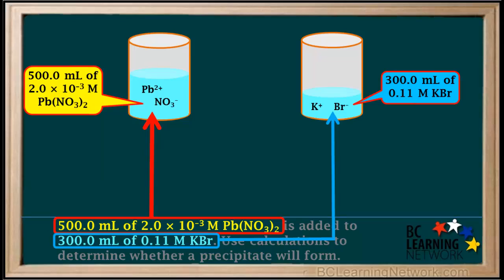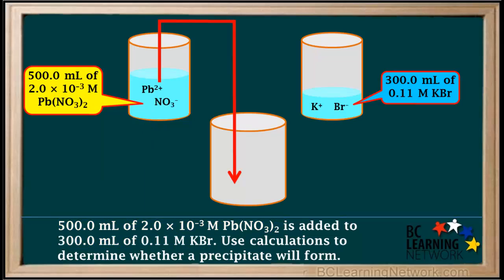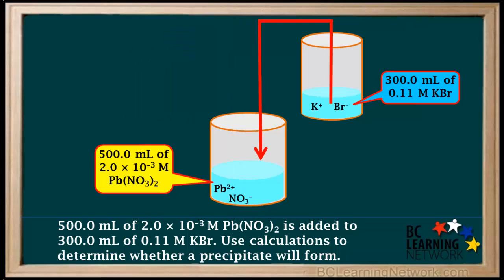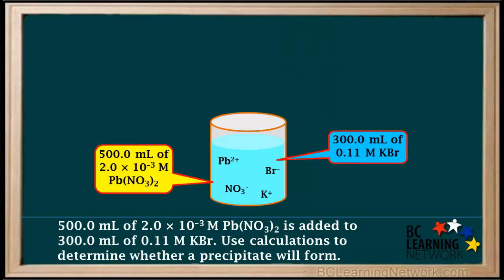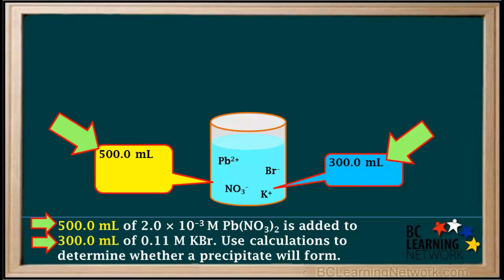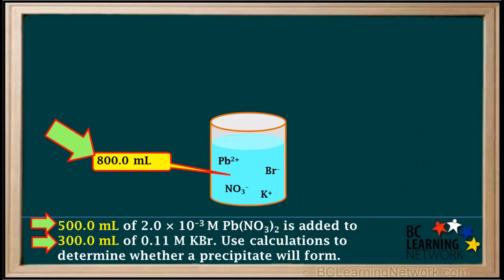Beakers with these two solutions and the ions they contain are shown here. The left beaker contains 500 milliliters of 2×10⁻³ molar Pb(NO₃)₂, and the right beaker contains 300 milliliters of 0.11 molar KBr. The Pb(NO₃)₂ solution is poured into a larger beaker, and the KBr solution is poured on top of it and mixed. The final mixture contains all four ions — Pb²⁺, NO₃⁻, K⁺, and Br⁻ — and the final volume is 500 + 300 = 800 milliliters.